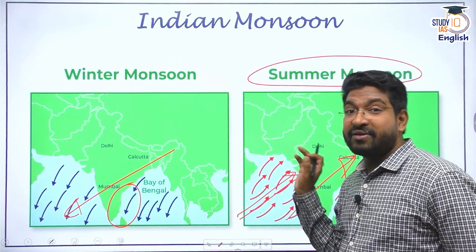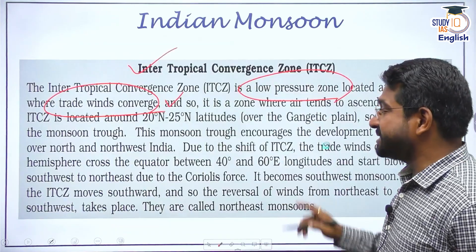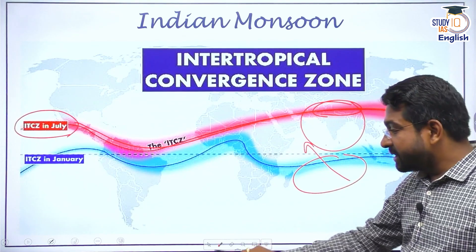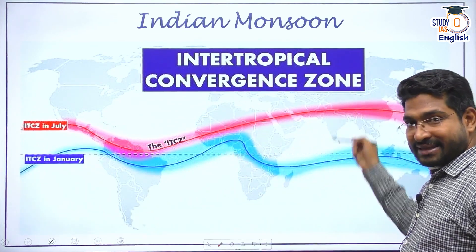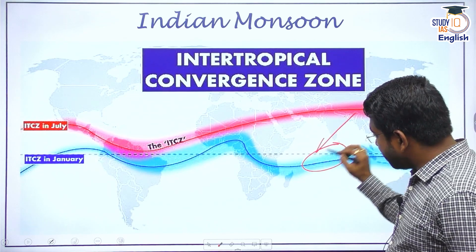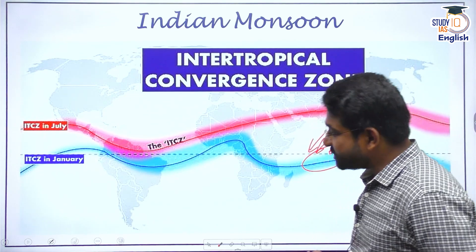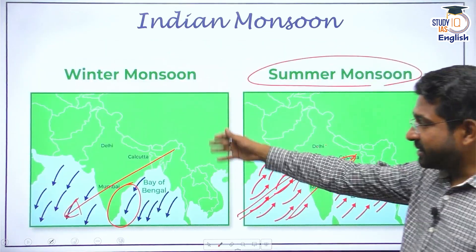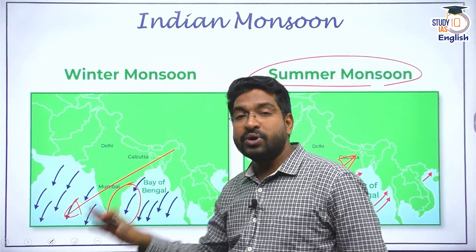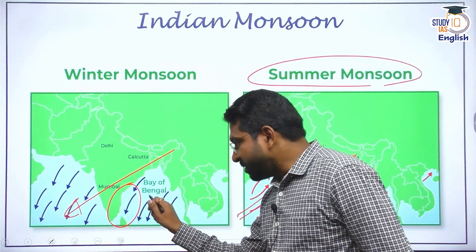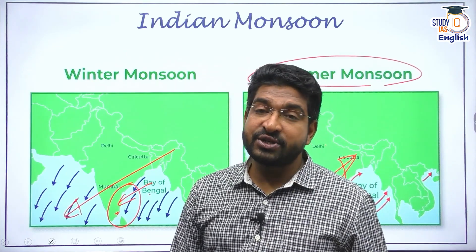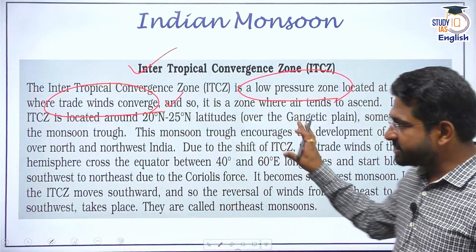During winter, the ITCZ moves towards the Southern side — south of the equator — meaning there is a reversal of winds. This makes the southern zone a low pressure area and India a high pressure zone during winter. The wind blows toward the ITCZ, leading to northeastern winds. These northeastern winds are quite dry and do not bring water because they are moving from land towards the sea. But during their movement over the Bay of Bengal, they capture moisture and give winter rainfall, especially in Tamil Nadu. That is the reason for the northeastern monsoon in Tamil Nadu.